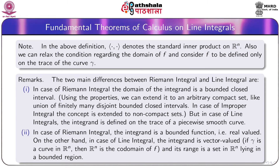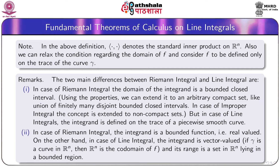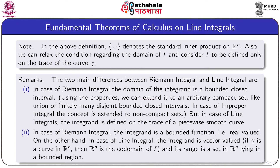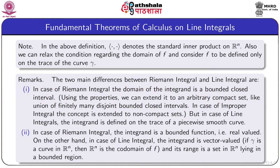Now we discuss some differences between Riemann integral and line integral. First, in the case of Riemann integral, the domain of the integrand is a bounded closed interval. Using some properties of Riemann integral, we can extend these to an arbitrary compact set like a union of finitely many disjoint bounded closed intervals. In the case of an improper integral, this concept was extended to non-compact sets also. On the other hand, in the case of line integrals, the integrand is defined on the trace of a piecewise smooth curve.